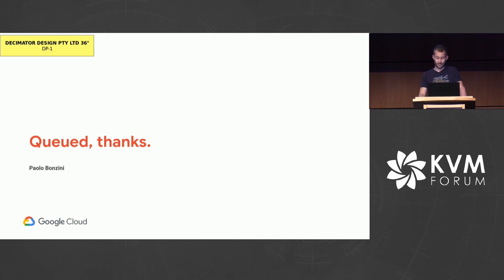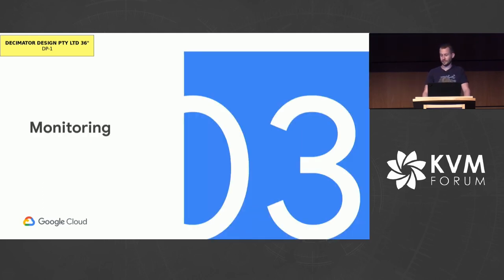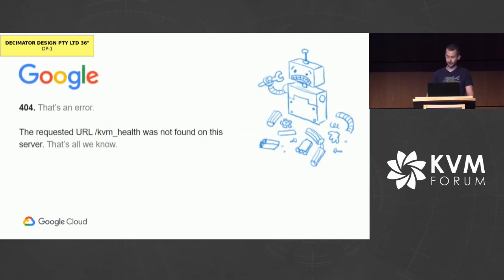Note: I'm picking on Paolo because he's the most visible KVM maintainer and 'queued, thanks' has reached mythic proportions. I'm not blaming Paolo, nor am I saying it's Paolo's responsibility to improve the situation — or at least it's not only Paolo's problem. Related to efficiency, and especially to maintainer efficiency, is monitoring. Or in KVM's case, the lack of monitoring.